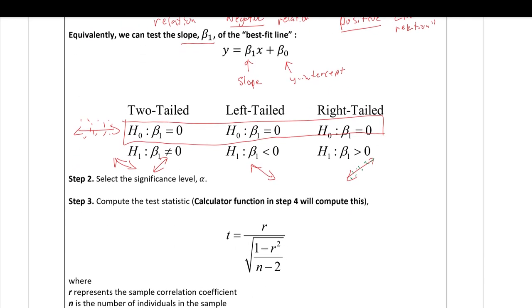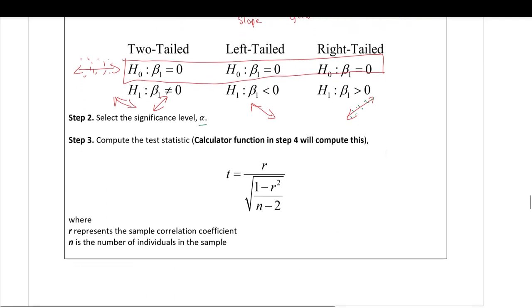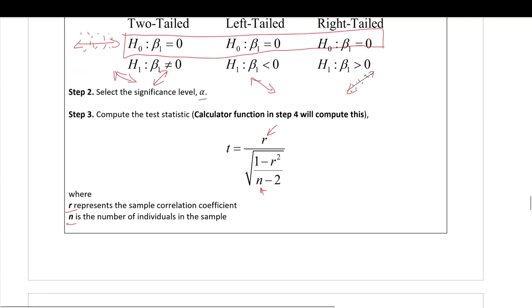Step two: select the significance level, which is given to you in the problem. Step three: compute the test statistic. It will actually be a T-distribution. You wouldn't want to do this by hand — while the formula just involves r and n, computing r itself is very tedious. Luckily, there is a calculator function that specifically does this for us.